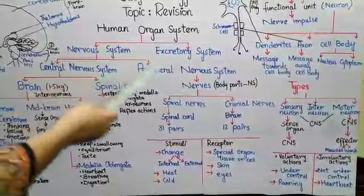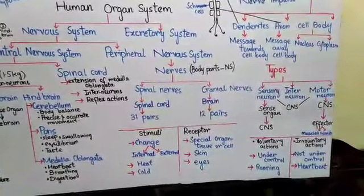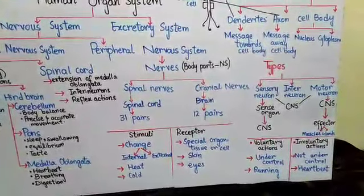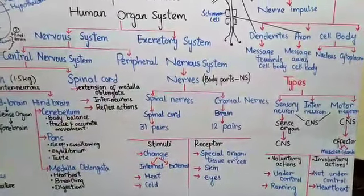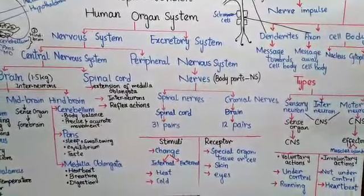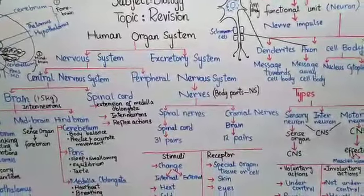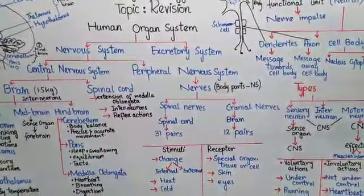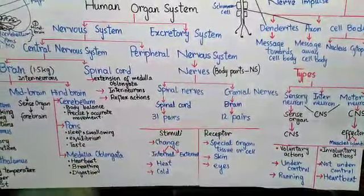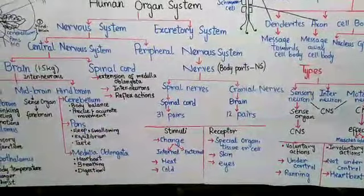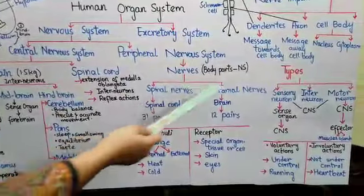The next part of the nervous system is the peripheral nervous system, which consists of a bundle of nerves. The nerves are cable-like bundles of axons covered in an enclosing sheet. The peripheral nervous system connects the body parts to the central nervous system and conveys messages to the entire body. There are two types of nerves: spinal nerves and cranial nerves.